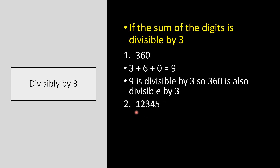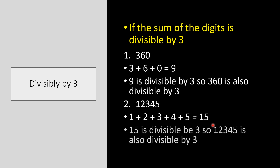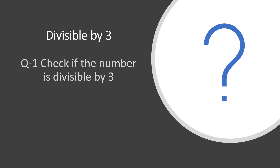Let us take one more example: 12,345. The sum of the digits is 1 + 2 + 3 + 4 + 5 = 15. Since 15 is divisible by 3, 12,345 is also divisible by 3. Practice is very important, so students, check if the number 3,979,6204 is divisible by 3 — do it in your notebook.